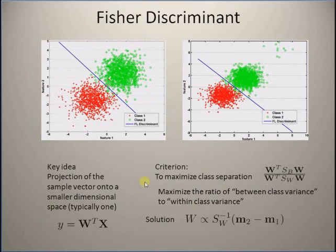Now let us look at the second method for finding the linear discriminant: the Fisher Linear Discriminant Analysis approach. The main idea is that you project the sample vector onto a smaller dimensional space, usually one-dimensional, using a weight vector that maximizes a certain criterion. The criterion is maximization of class separation, defined as the ratio of between-class variance to within-class variance.